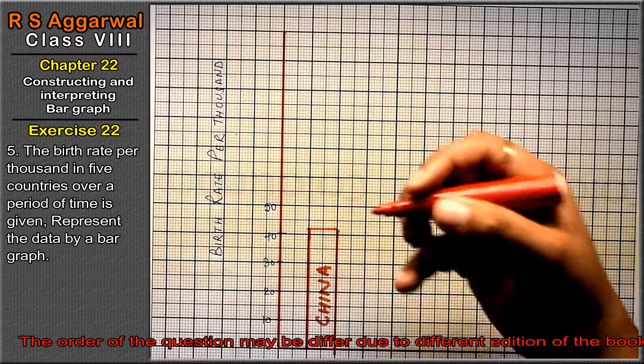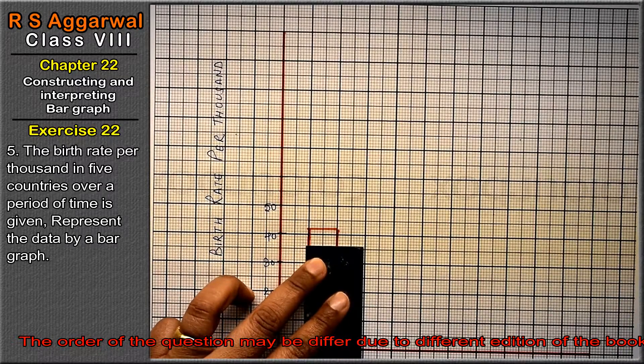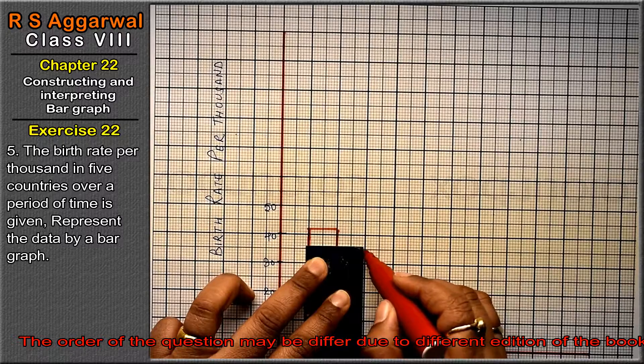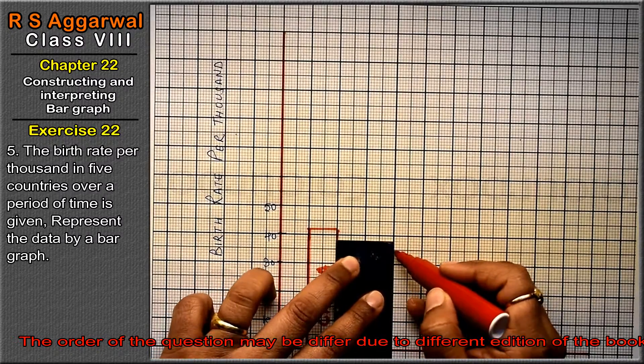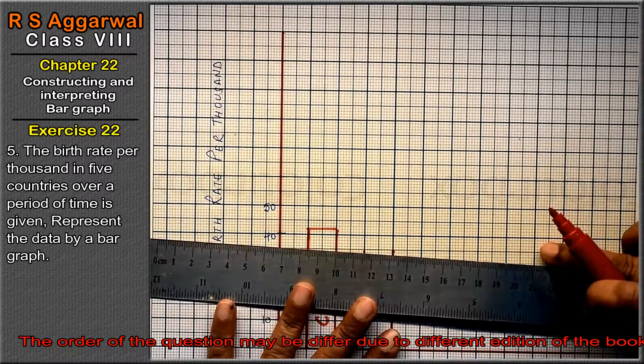Next is 35 for India. 30 and 5. That is for India, 3 blocks and 5.